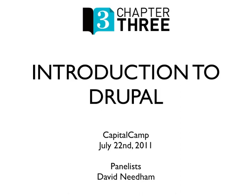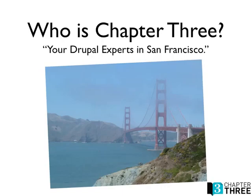So let's get started. I mentioned Chapter 3 — who is Chapter 3? We are a company out of San Francisco, California, about 30 people or so. I started working for Chapter 3 almost a year ago, immediately following DrupalCon San Francisco. I was hired as a themer and trainer, so that means I make websites look pretty and I travel around to conferences like this and give talks and training sessions.